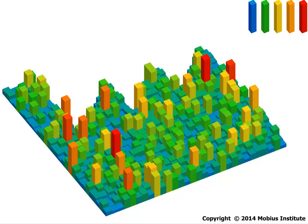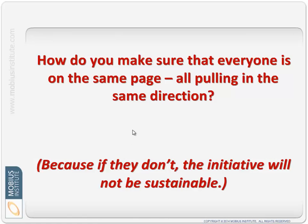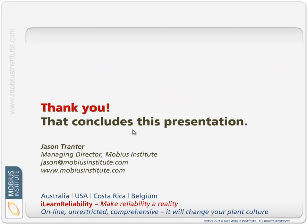So, the idea is iLearn Reliability is there so that everyone is on the same page, there's the expertise where necessary, but everyone understands why improving reliability is so important for safety reasons, financial reasons, environmental reasons. Well, I hope this presentation has made sense. I hope this graphical representation of the knowledge has helped me to explain what we're trying to achieve with iLearn Reliability. Thanks for your time.